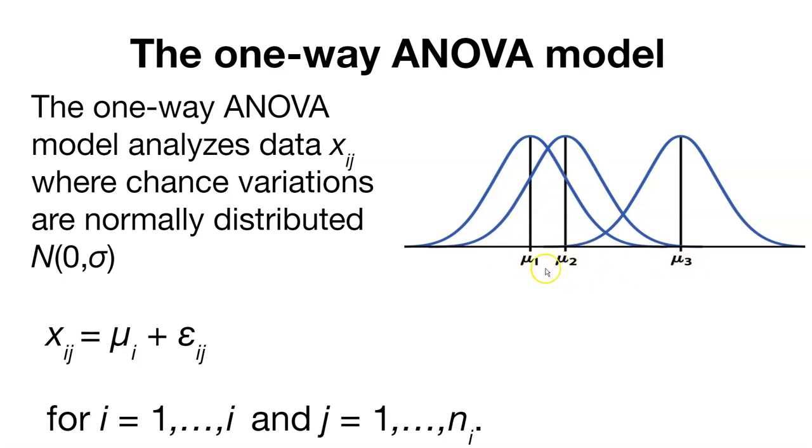So we have these different levels of mu, or our different treatments, or factors, and we can see that they're different. And so are they statistically different? That's really what we want to find out.